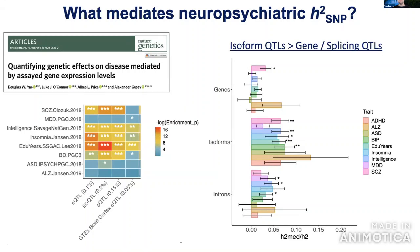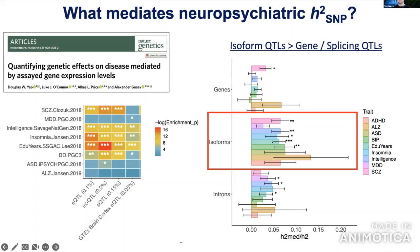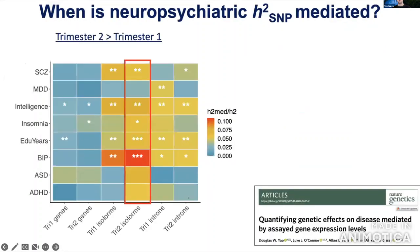Using eQTLs, isoQTLs, and splice QTLs, we ask to what degree these annotations mediate the heritability of neuropsychiatric GWAS traits. We find that isoform QTLs substantially capture and mediate more heritability than gene expression or splicing QTLs alone. Looking at temporal regulation, we find the second trimester mediates a greater degree of heritability for multiple traits than the first trimester, particularly for isoform quantifications.